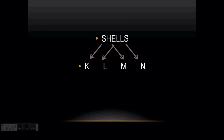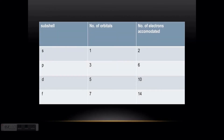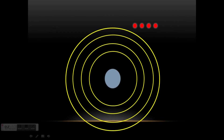The shells we mostly consider are K, L, M, and N, and the sub-shells are S, P, D, and F. A table gives information about each sub-shell, the number of orbitals, and the number of electrons accommodated. The number of orbitals follows the consecutive odd numbers 1, 3, 5, 7. You can find the number of electrons accommodated by multiplying the number of orbitals by 2: giving 2, 6, 10, and 14.